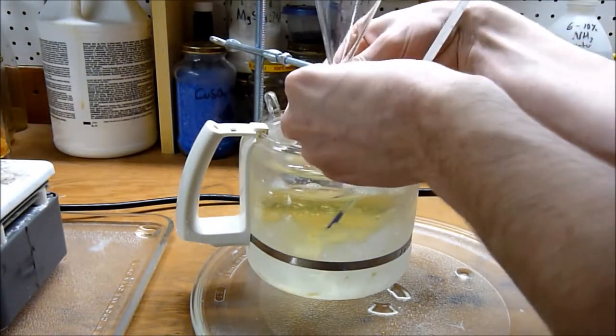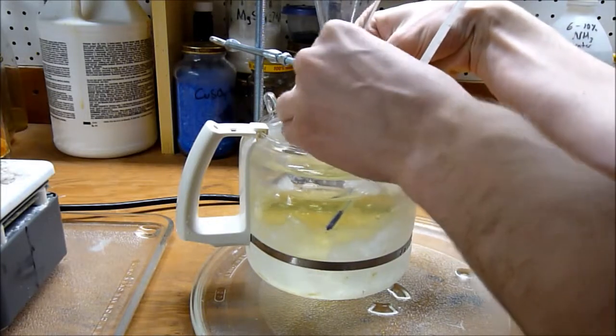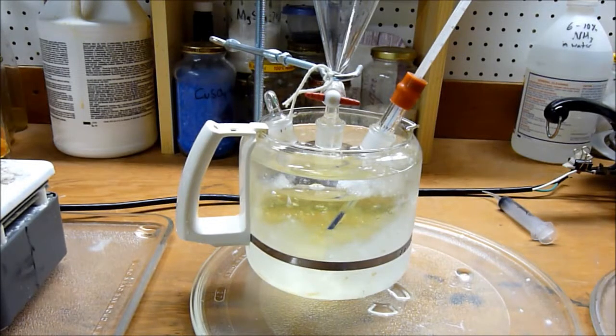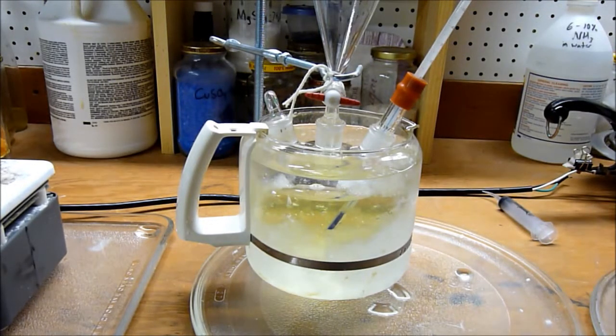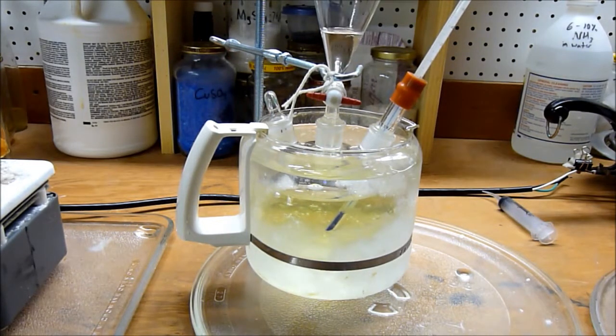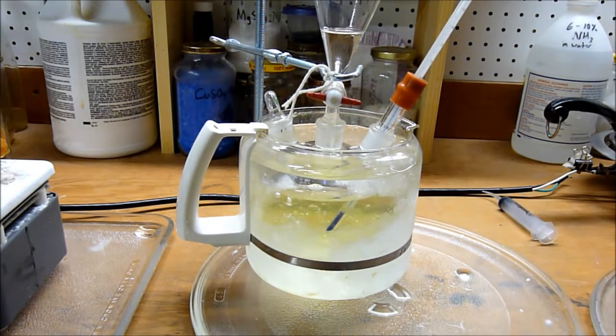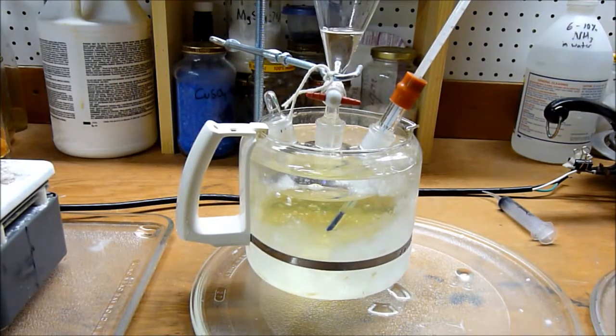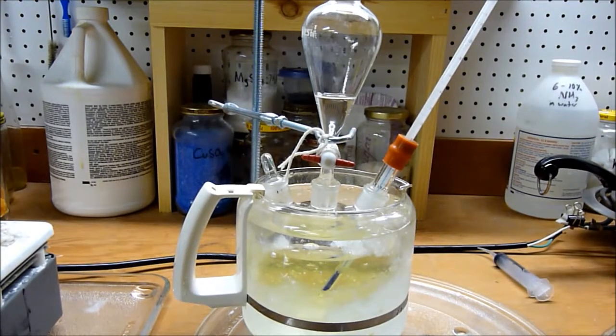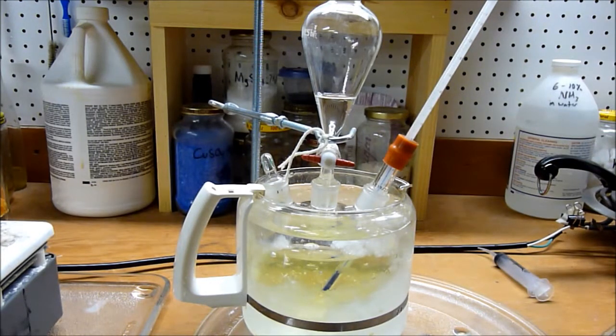Make sure the stopcock is in fact off, because otherwise that would lead to quite a disaster. Here goes the acetone. Now we have the acetone in the addition funnel right over the sodium hypochlorite solution. We will now begin slowly adding the acetone in small increments while monitoring the temperature to make sure nothing gets out of hand.